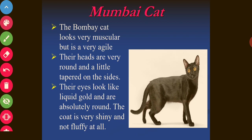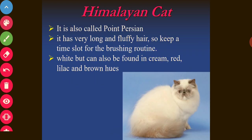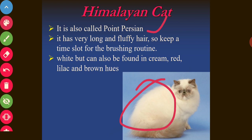The Bombay cat looks very muscular but is very agile. Its head is very round and slightly tapered on the side. Its eyes look like liquid gold and are absolutely round. The coat is very shiny but not fluffy. The Himalayan cat, also called 'pointed Persian,' has very long and fluffy fur requiring regular brushing. It is typically white but also found in cream, red, lilac, and brown.